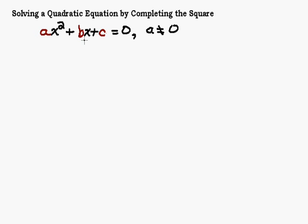Now b might be zero and c might be zero, so there might not be a c term or there may not be an x term. But to be a quadratic equation there's going to be an x squared term. Most of the time when you're solving a quadratic equation you're going to solve it by factoring or by using the quadratic formula.